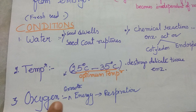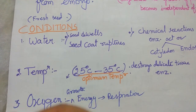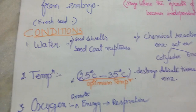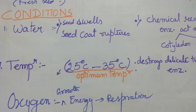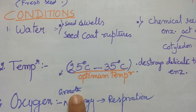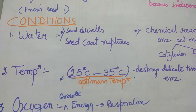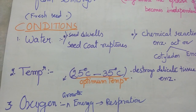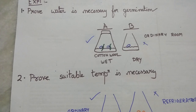The third condition required is availability of oxygen. As the seed is growing, all activities require energy, and we get energy by the process of respiration — the intake of oxygen for degradation of glucose. More oxygen is required as more energy is needed for the growth process. So the three factors responsible for germination are water, optimum temperature, and oxygen. We will now study experiments to prove these conditions are vital.